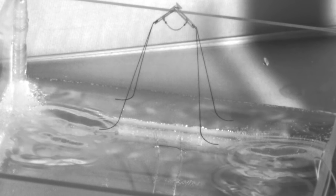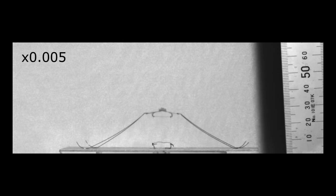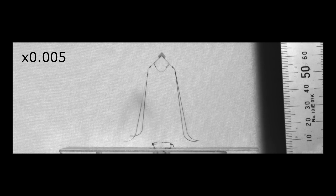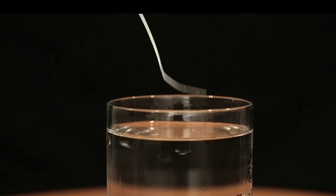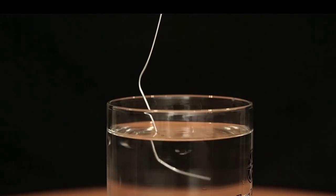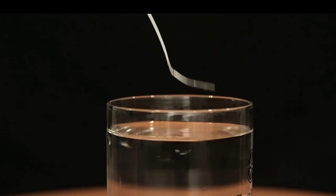When jumping on land, organisms or robots must apply a large force suddenly. But if you apply a large force suddenly on water, you will lose the surface tension force required to achieve liftoff.